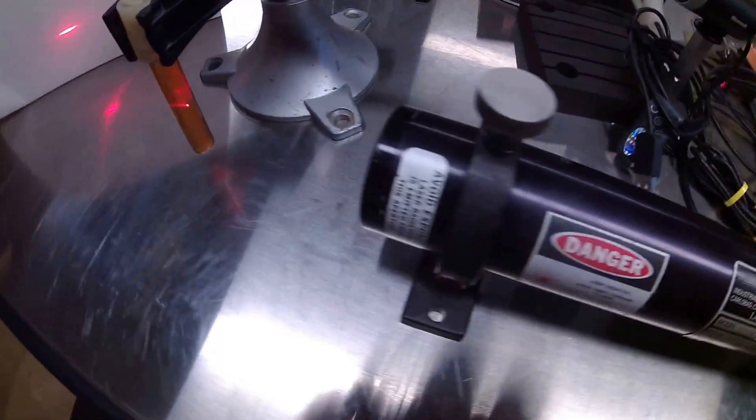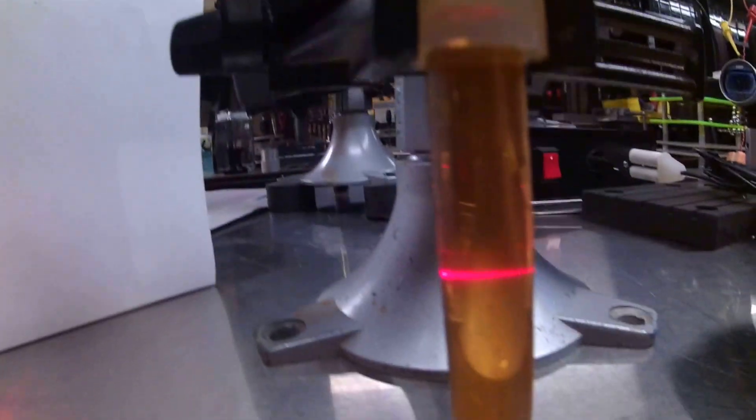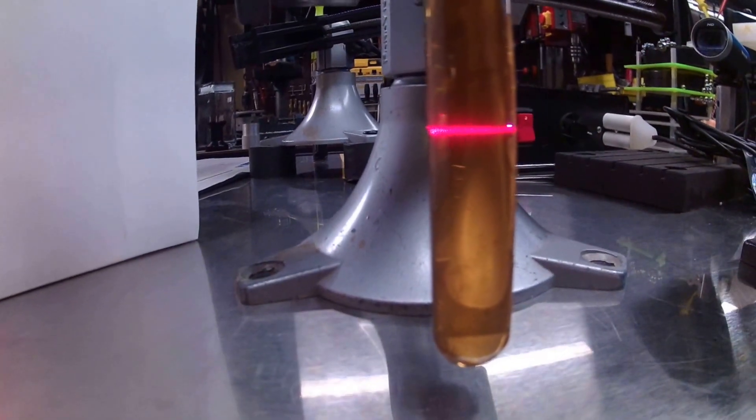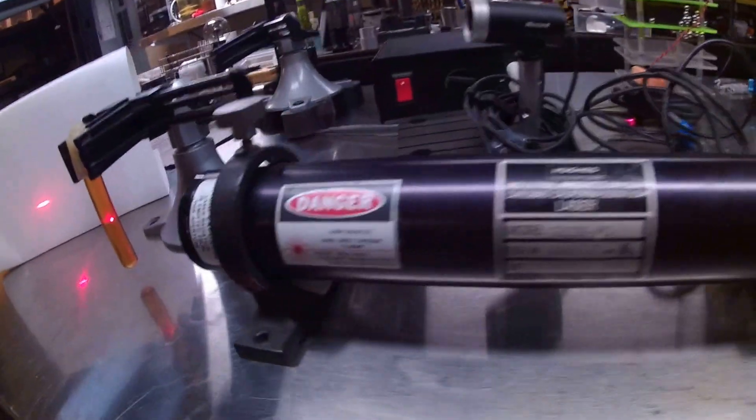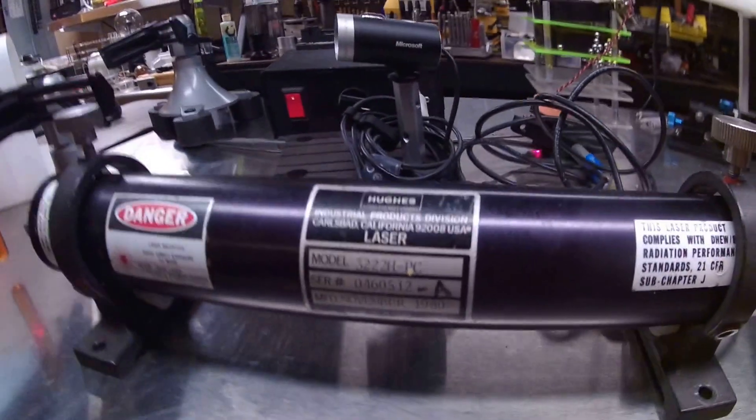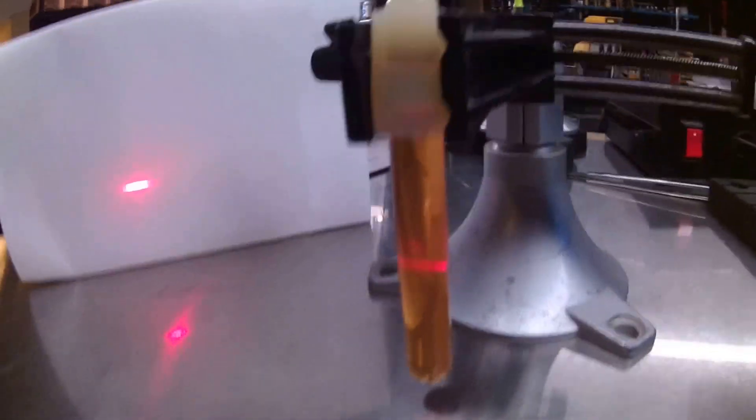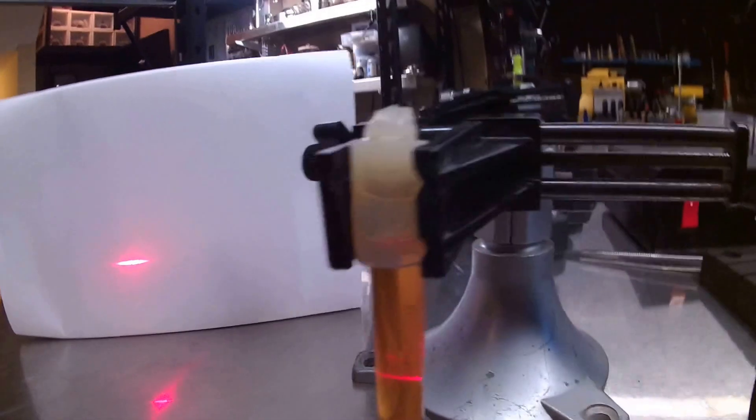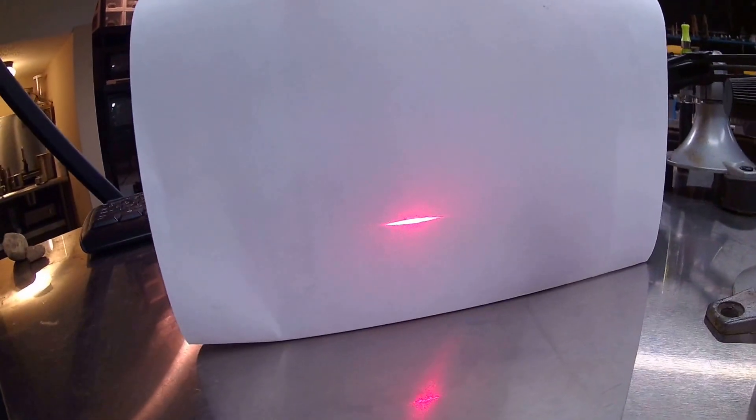Alright, it's working. This is that liquid I made in the video yesterday - the almond oil. I'm shooting a helium neon gas laser through it, and then it's hitting a screen.